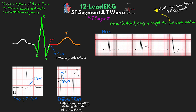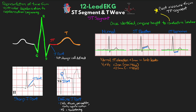The first waveform is a normal one — no ST depression or elevation, right at the isoelectric line. The next shows ST elevation, where the ST segment is above the isoelectric line. And then the third shows ST depression, where the ST segment is below the isoelectric line. When counting boxes, it is normal to have less than one millimeter of ST elevation in any of our limb leads. In V2 and V3, up to two millimeters of elevation is normal for men older than 40, up to 2.5 millimeters for men under 40, and up to 1.5 millimeters for women. For the remaining precordial leads, we also expect less than one millimeter of ST elevation.